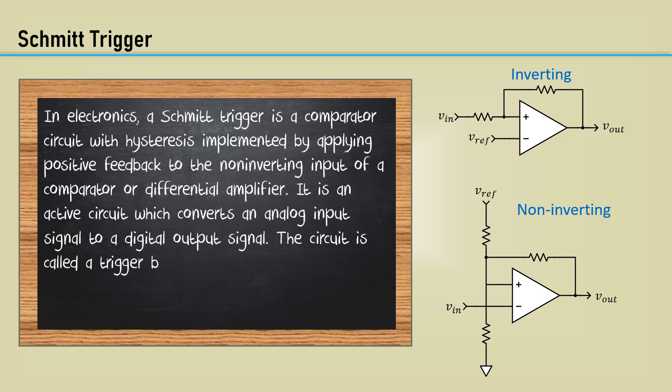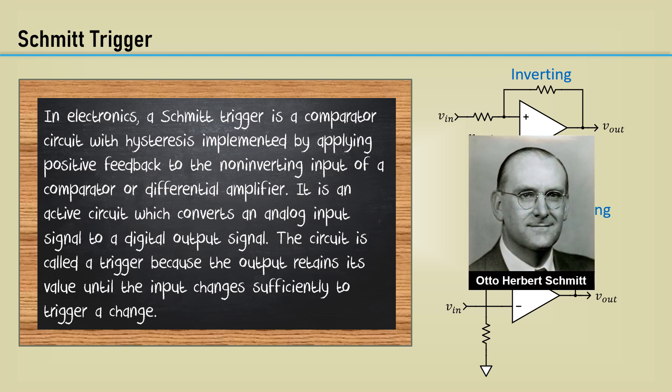The circuit is called a trigger because the output remains its value until the input changes sufficiently to trigger a change. Otto Schmitt was an American inventor, engineer, and biophysicist known for his scientific contributions to biophysics and for establishing the field of biomedical engineering.